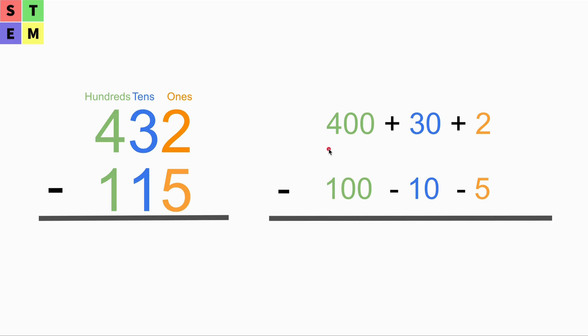For the 432, we can actually write it as 400 plus 30 plus 2. And minus 115, so we have minus 5 at the ones place, we are going to minus 10 at the tens place, and we are going to minus 100 at the hundreds place.